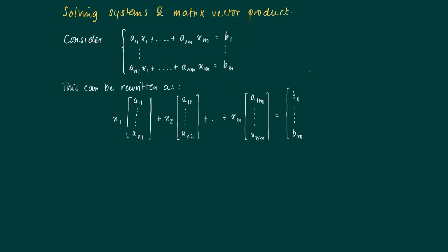And on the right hand side we group the vector of known terms, the b terms.